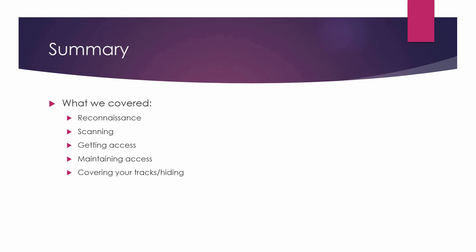Summary. We covered the five steps involved in a typical attack on a system or network: reconnaissance, scanning, getting access, maintaining access, and covering your tracks and hiding.